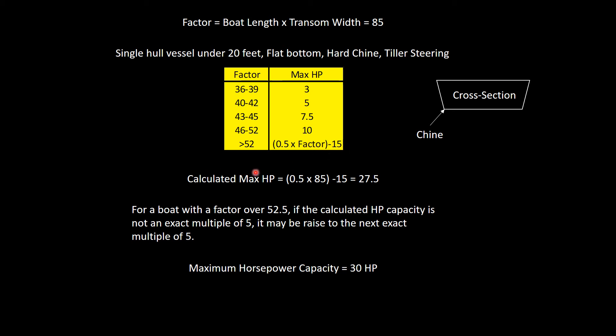If we're going to calculate the max horsepower for this boat, we take 0.5 times our factor of 85, minus 15, and you get 27.5. The Coast Guard has a note in this ruling that says for a boat with a factor over 52.5, which we do, we're 85. If the calculated horsepower capacity is not an exact multiple of 5, it may be raised to the next exact multiple of 5. Because usually outboards of this size come in 5 horsepower increments. So the Coast Guard will allow us to raise this to the next multiple of 5, which would be 30 horsepower.